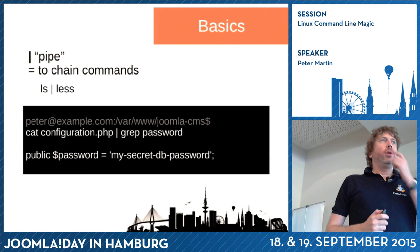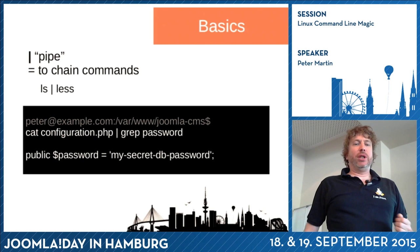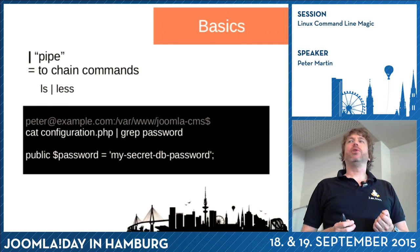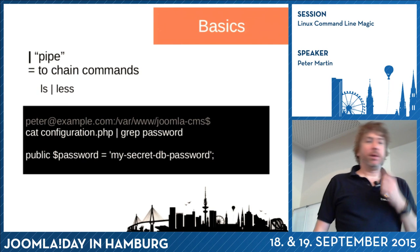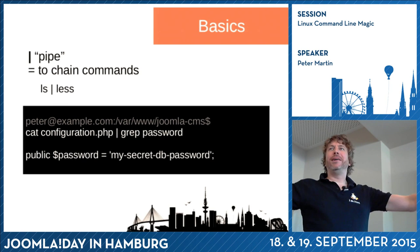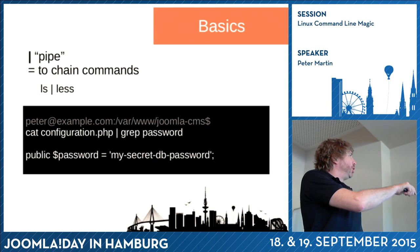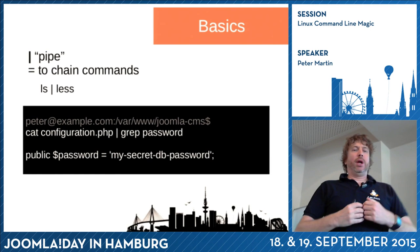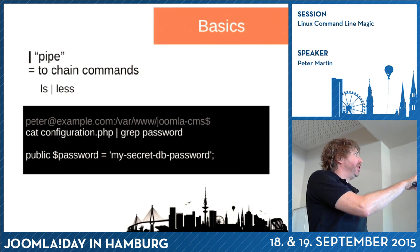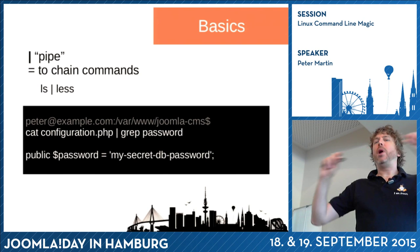Maybe you have a really long configuration file and you want to see the passwords of your Joomla website. Grep will show the line with the information you're looking for. So cat configuration will print everything, but with the pipe and grep, it will only display the line containing the password.